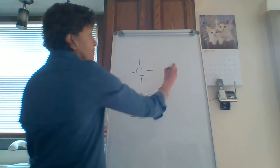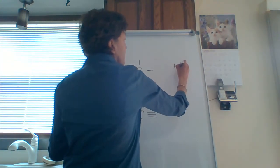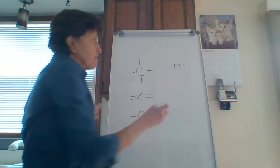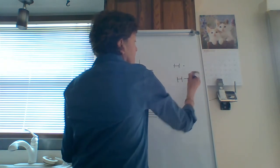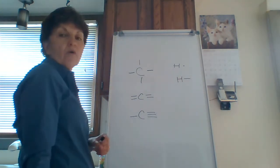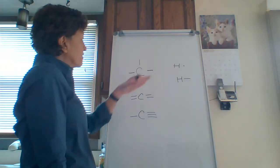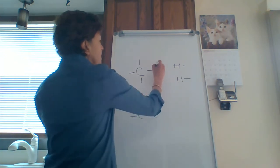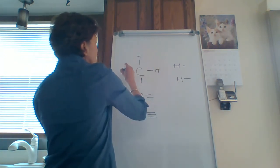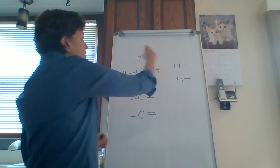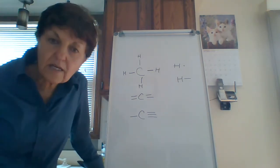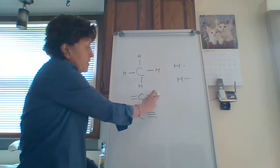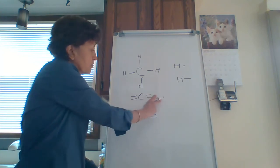Now hydrogen, if you remember from intro chem, has one valence electron. So guess how many bonds hydrogen is going to have? Just one. So when you're looking at something like this, you can put a bunch of hydrogens around a carbon. This is a carbon with four single bonds to four hydrogens. You obviously can't put a hydrogen here because that would give hydrogen two bonds.